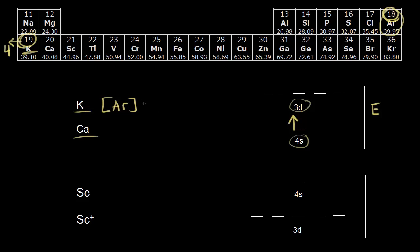The complete electron configuration using noble gas notation for potassium is [Ar] 4s¹. For calcium, we have one more electron than potassium, so that electron also goes into the 4s orbital. We pair our spins and write the electron configuration for calcium as [Ar] 4s².